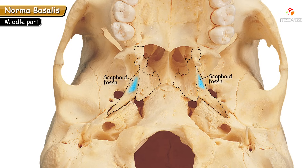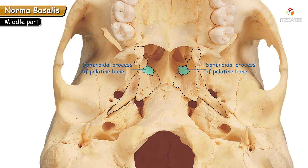The pterygoid fossa is the fossa between the medial and lateral pterygoid plates, whereas the scaphoid fossa is a very small triangular depression in the medial pterygoid plate itself, near the body of the sphenoid. Tracing the medial pterygoid plate at its articulation with the sphenoid, it articulates anteriorly with the sphenoidal process of the palatine bone. The medial pterygoid plate continues as a process called the vaginal process.